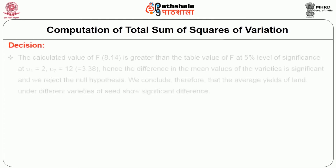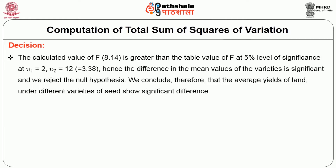Decision: the calculated value of F is greater than the table value of F at the 5% level of significance. Hence, the difference in the mean values of the varieties is significant and we reject the null hypothesis. We conclude therefore that the average yields of land under the different varieties of seed show significant difference.